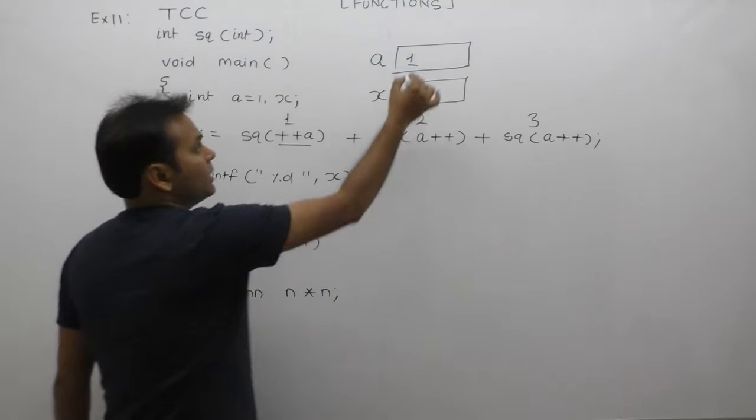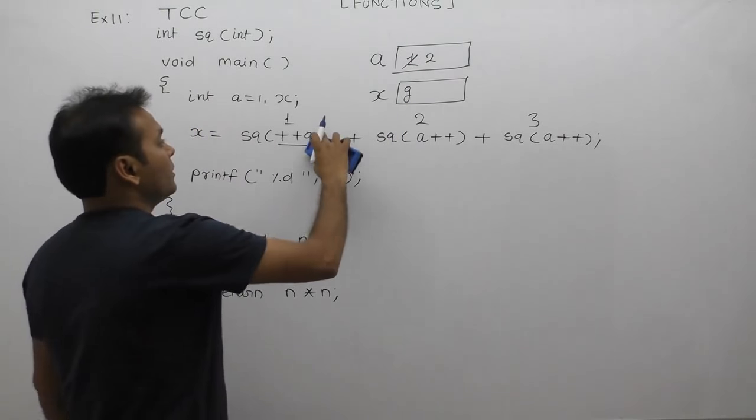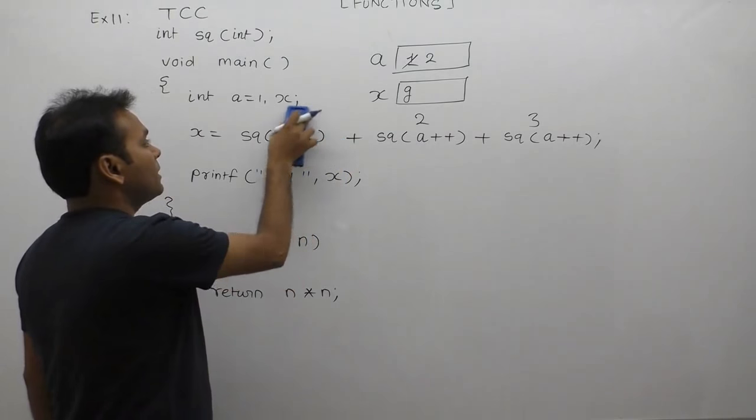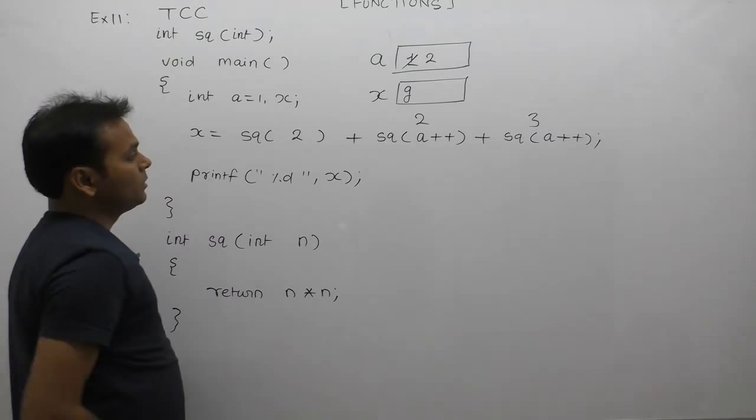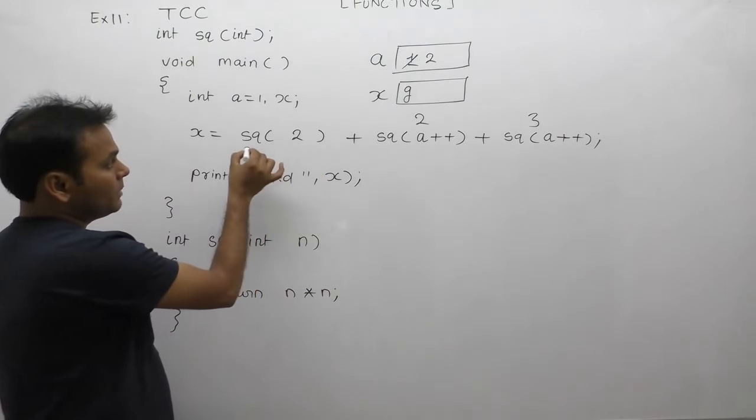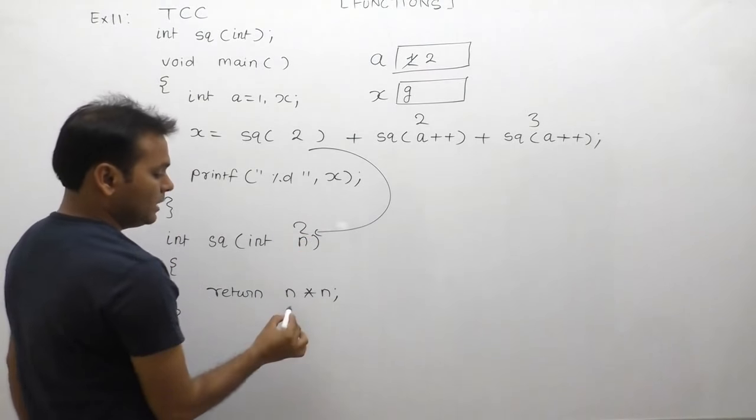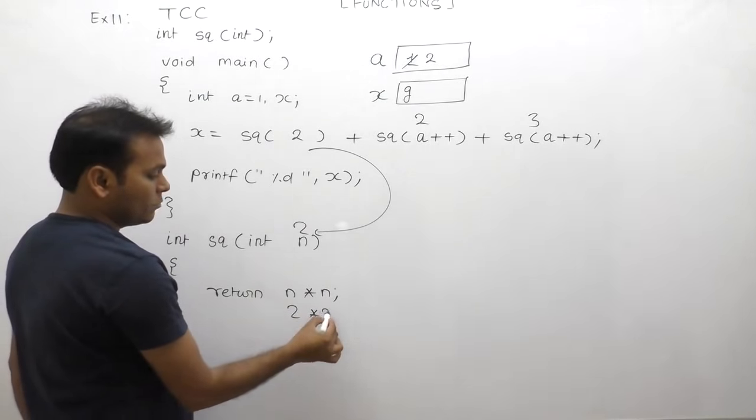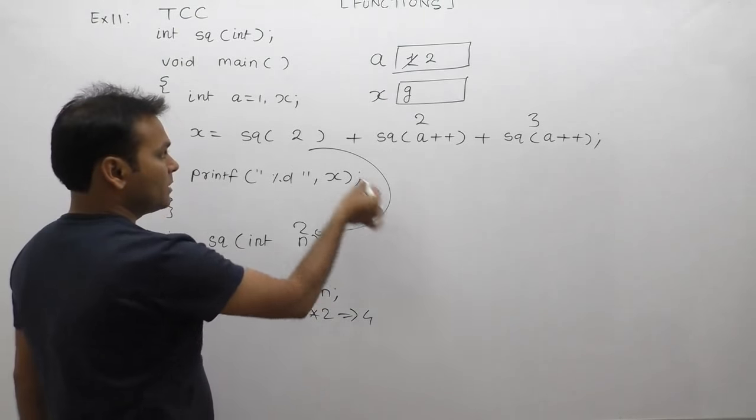After that, a's value is 2, passed to the sq function. According to the calling, 2 multiplied by 2 results in 4. The final function calling returns 4. We can replace in the calling place the return value of that function as 4.